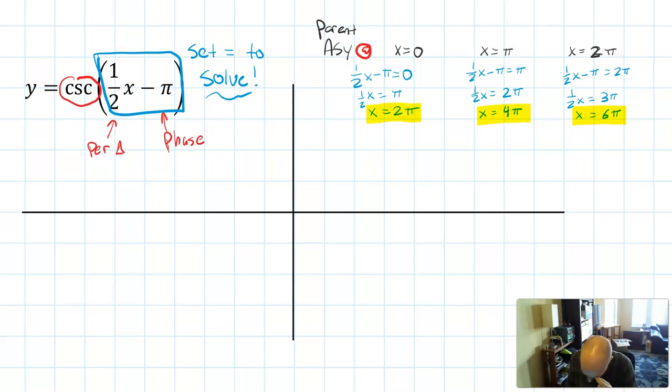So it seems like the asymptotes happen every 2π apart. Let's double check that. The period should be 2π over B, or 4π. Well, the total distance from the start of a period to the end of a period is two 2π spaces, or 4π. So our solving algebra here agrees with what we know about the period being 2π over B.